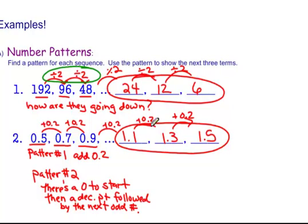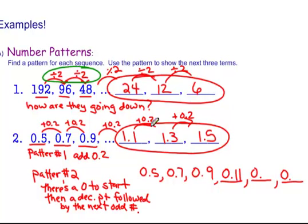Let's see the pattern. 0 to start. Here's my first terms given to me. Next three terms. Well, I start with a 0, followed by a decimal point, and then I fill in with the next odd number. Next odd number is 11. Next odd number is 13. Next odd number is 15.